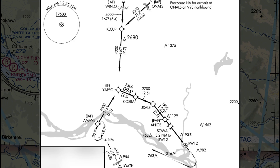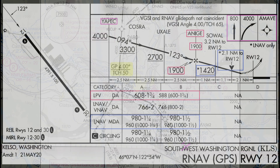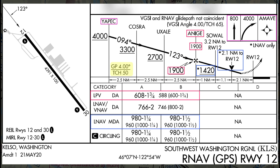I began the procedure at Windlow and proceeded south via the charted transition to YAPEC. After YAPEC, you fly a series of short legs, including a 31-degree course change to fly the final approach at Uxale, then straight to the final approach fix at Angie. The profile view shows other hurdles — you must observe a series of altitude restrictions, and the glide path is 4 degrees, steeper than the typical 3-degree descent angle associated with ILS or LPV vertical guidance.